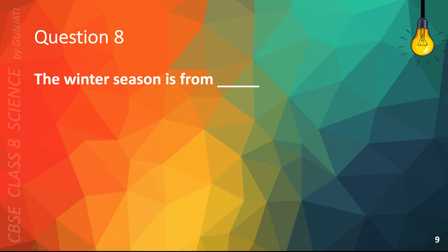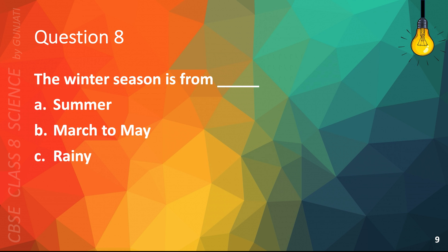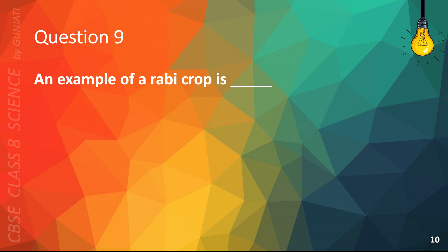Question 8. The winter season is from blank to blank. A. Summer, B. March to May, C. Rainy, or D. October to March. The correct answer is D. October to March.